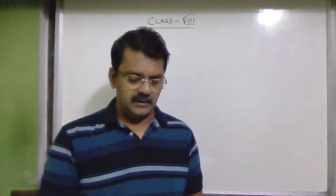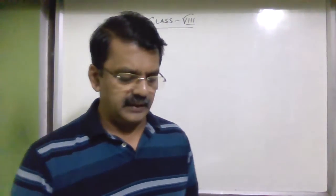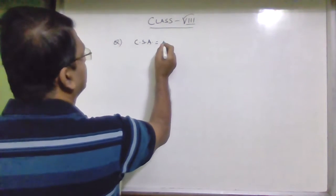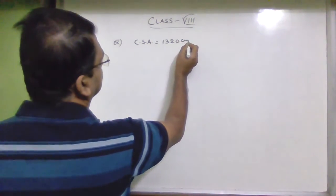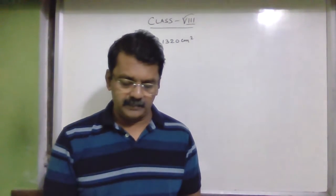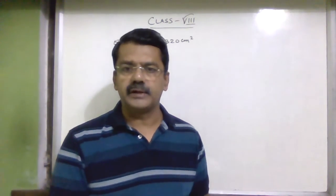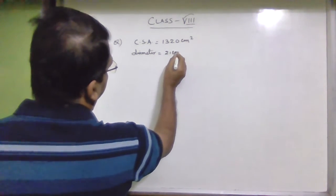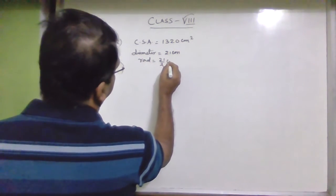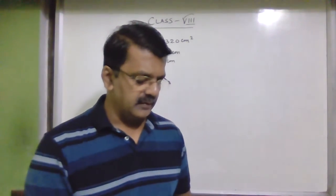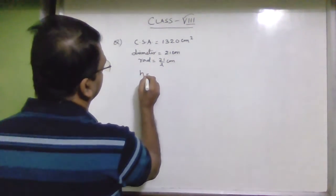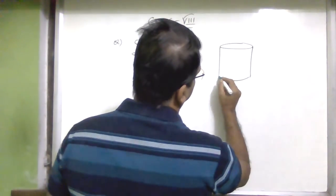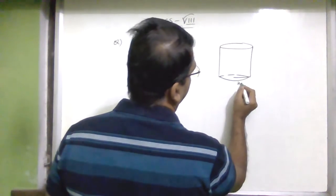The next question: the curved surface area of a cylinder is 1320 centimeter square, and its base has a diameter of 21 centimeter. So the radius will be 21/2 centimeter. You have to find the height of the cylinder.